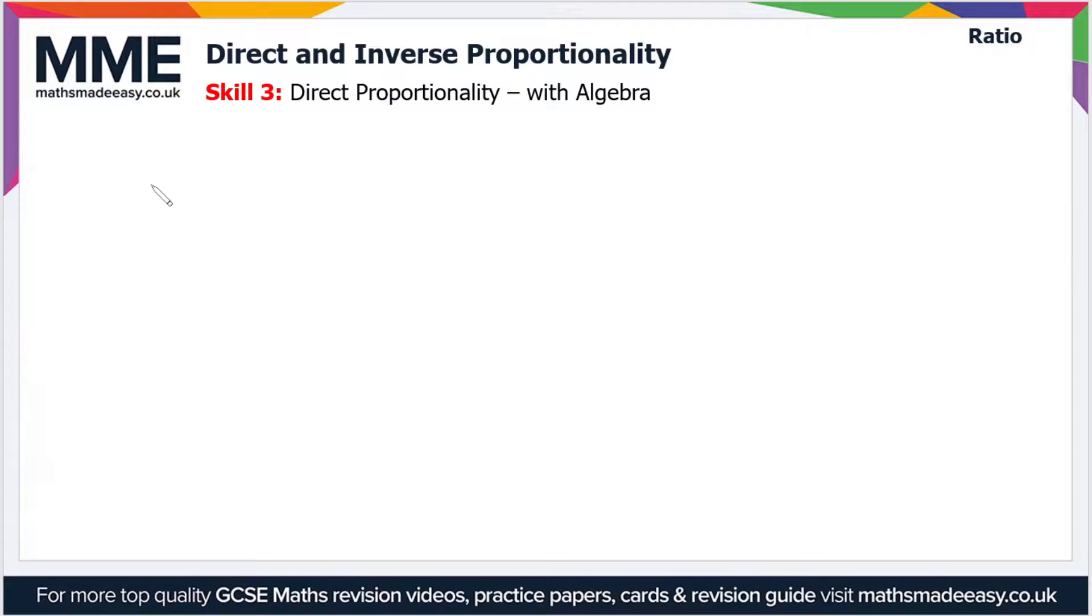Welcome to the Maths Made Easy tutorial on direct and inverse proportionality. In this video, we'll cover the two concepts using algebra. If we've got two quantities, let's say they're y and x, and these are both directly proportional to one another, then we can express this relationship like this. This symbol is the Greek letter alpha.